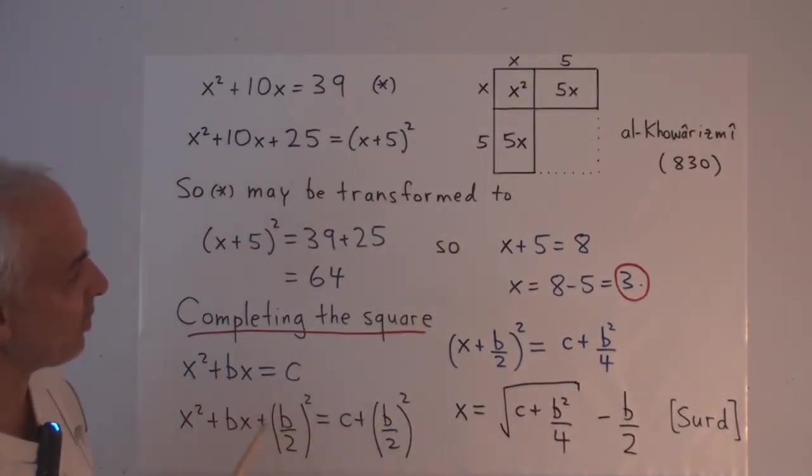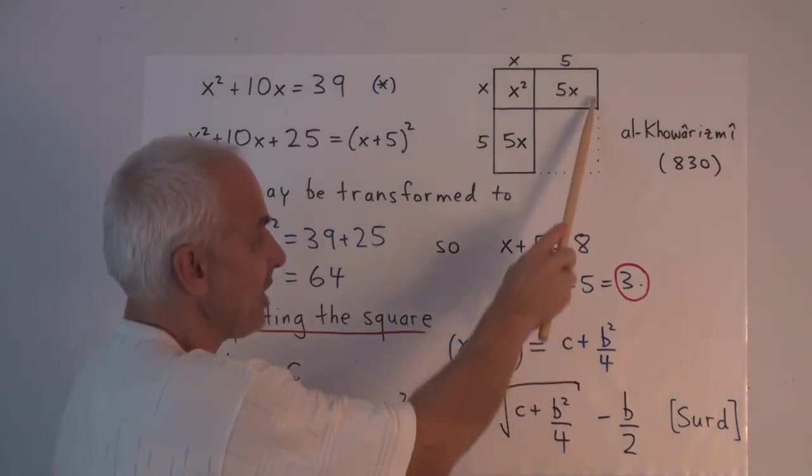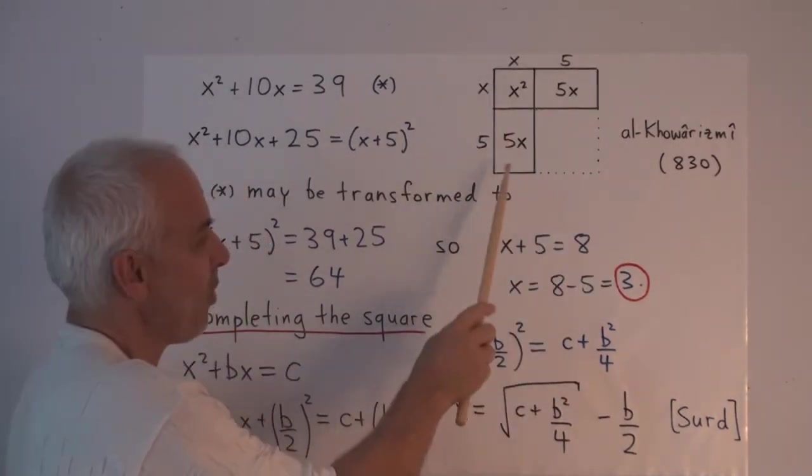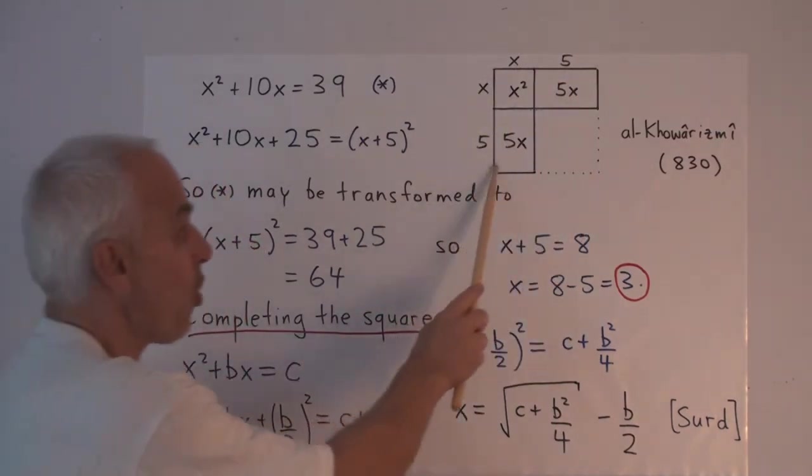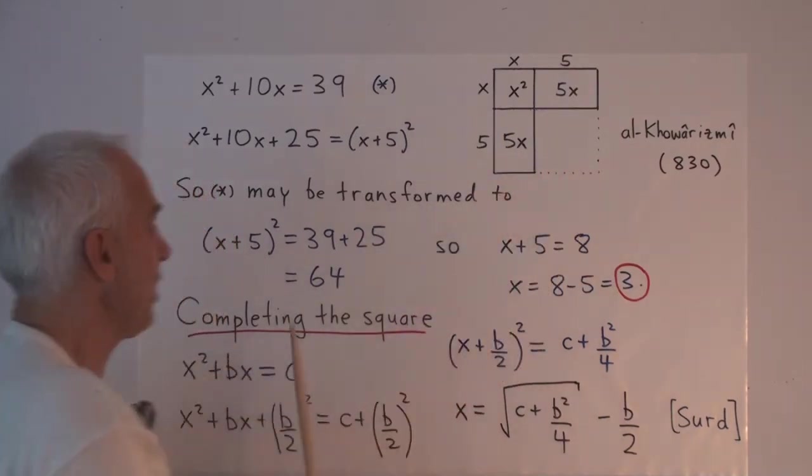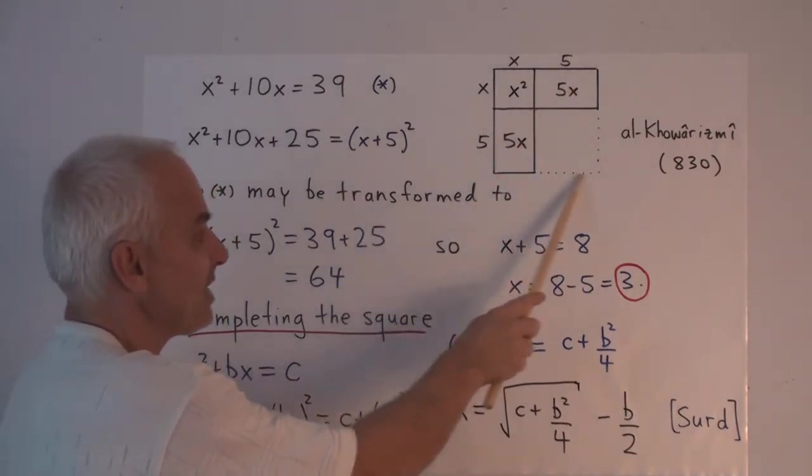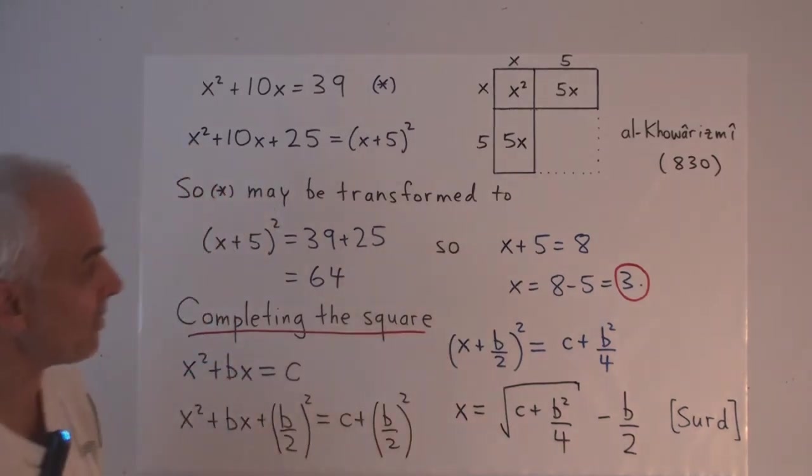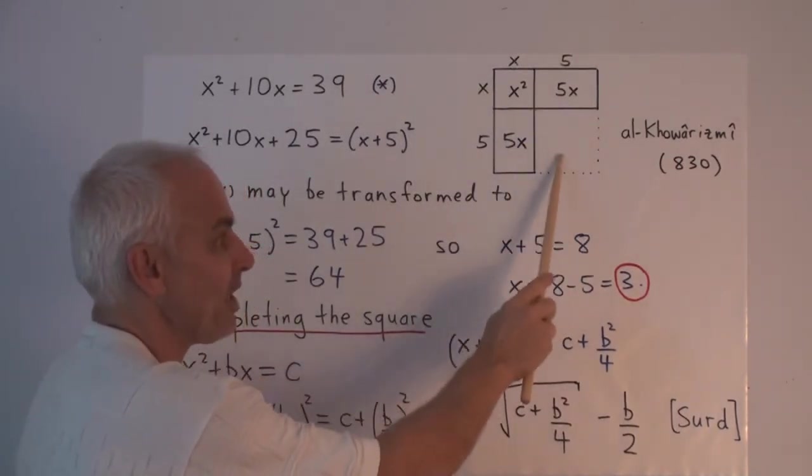And so now what we do is we think about completing this diagram to a square. In other words, these dotted lines here, we add another portion so that now we have a complete square. Once we've done that, then we have a square whose side is x plus 5. So this total area here will be x plus 5 squared. And that's going to be the area that we started with, which we're assuming is 39, plus the area of the square that we've added. And what is the area of the square that we've added? Well, it's 5 by 5, so this area here is 25.